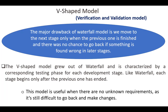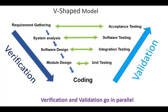This model is useful when there are no unknown requirements, as it is still difficult to go back and make changes. The V-shaped model provides means of testing software at each stage in reverse manner, so we have one testing unit for each stage in the software development lifecycle.